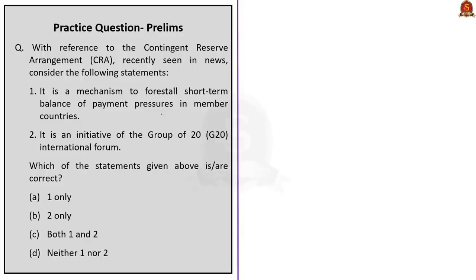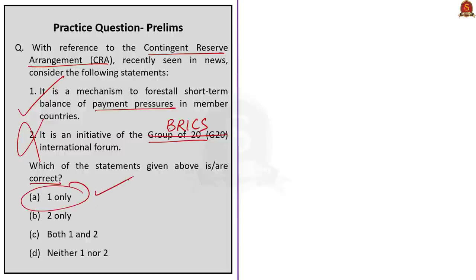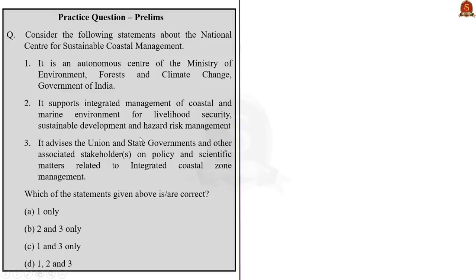Moving on to the next question. With reference to the Contingent Reserve Arrangement, CRA, recently seen in news, consider following statements. First statement: It is a mechanism to forestall short term balance of payment pressures in member countries. Second statement: It is an initiative of Group of 20, G20 International Forum. Which of the statements given above are correct? From our discussion, it is clear that the statement one is correct. Whereas when you take the statement two, it is incorrect. CRA is an initiative of BRICS. It is not an initiative of Group of 20 or G20. So, the answer is A, one only. Only the first statement is correct. Second statement is incorrect.